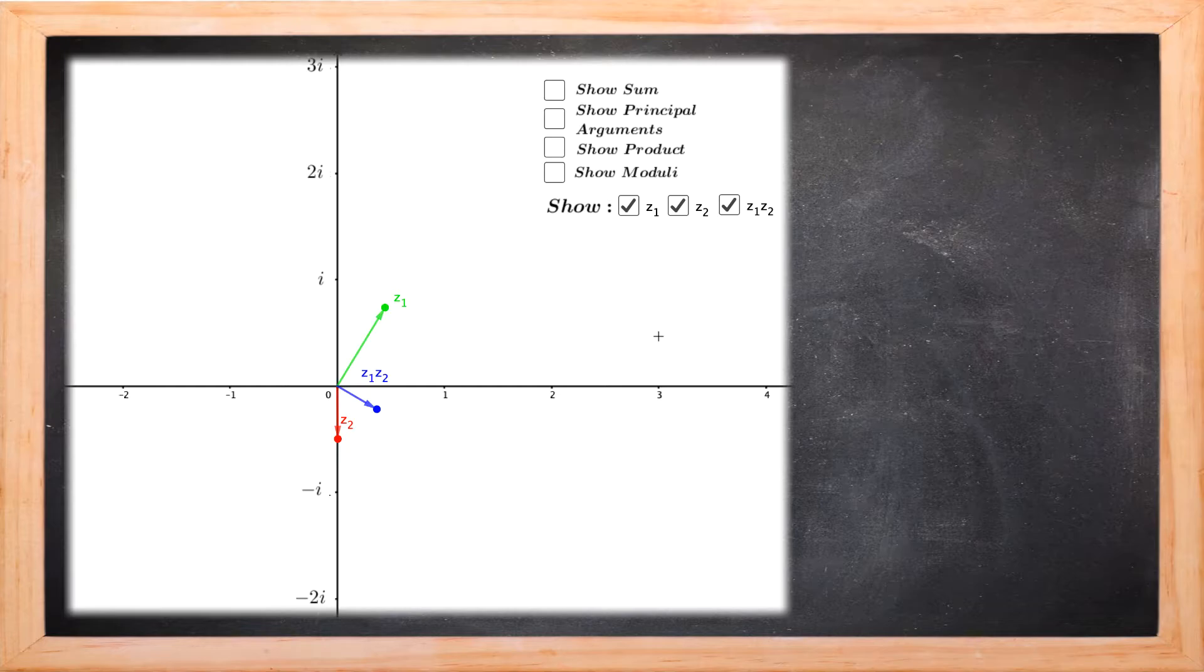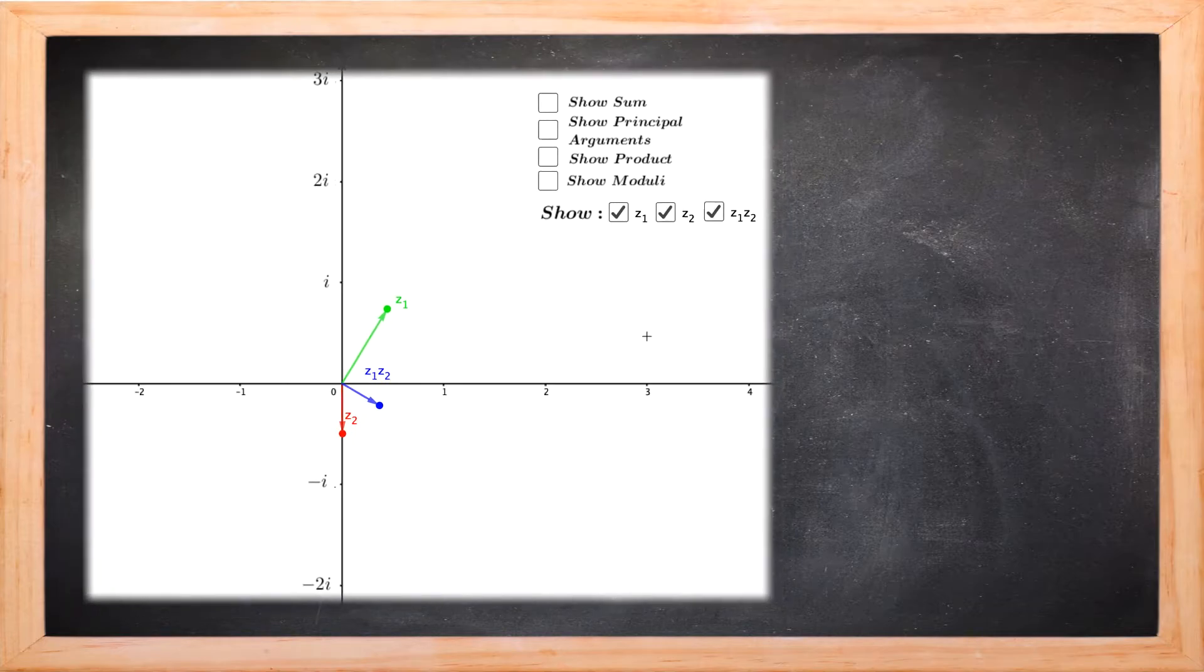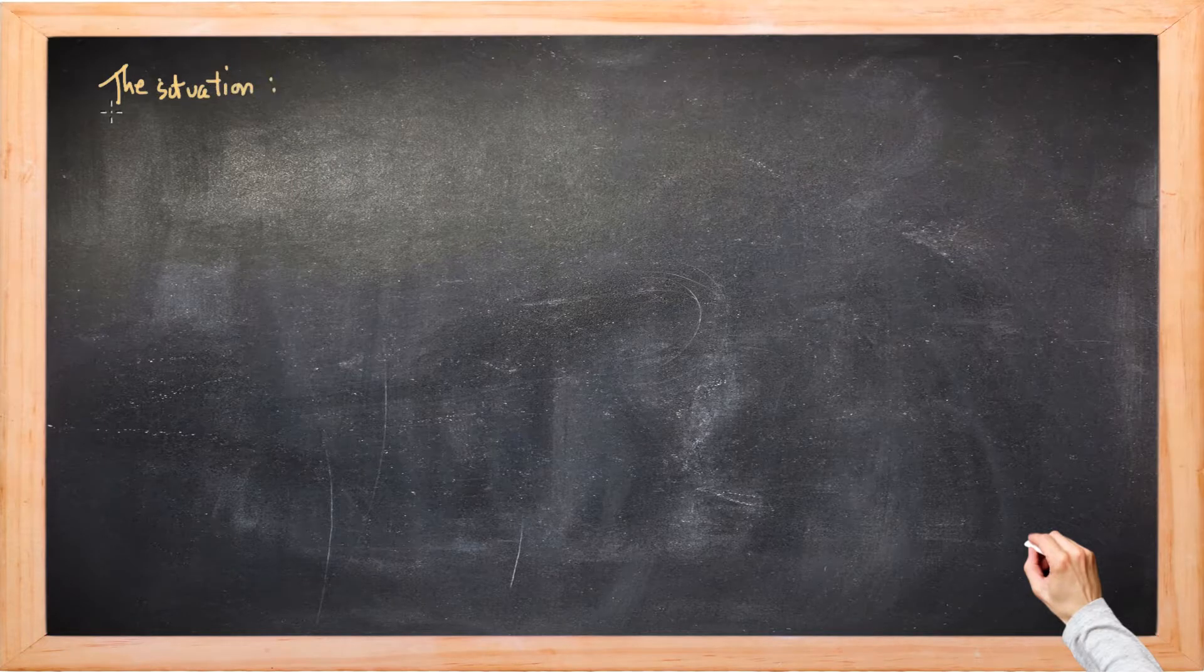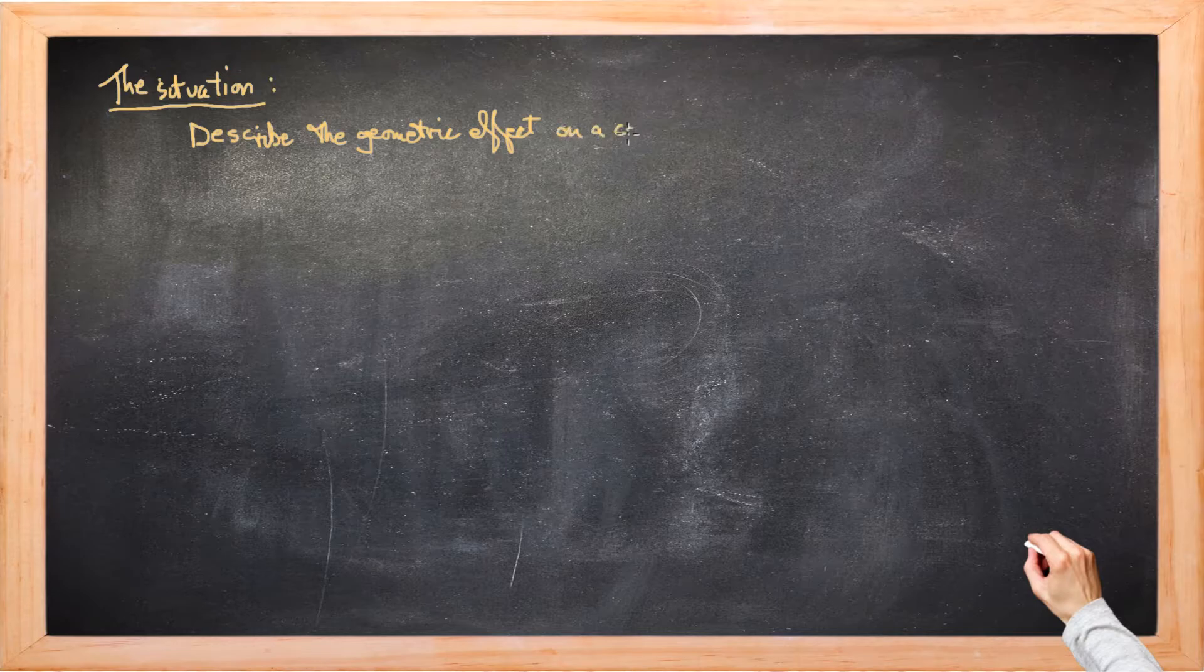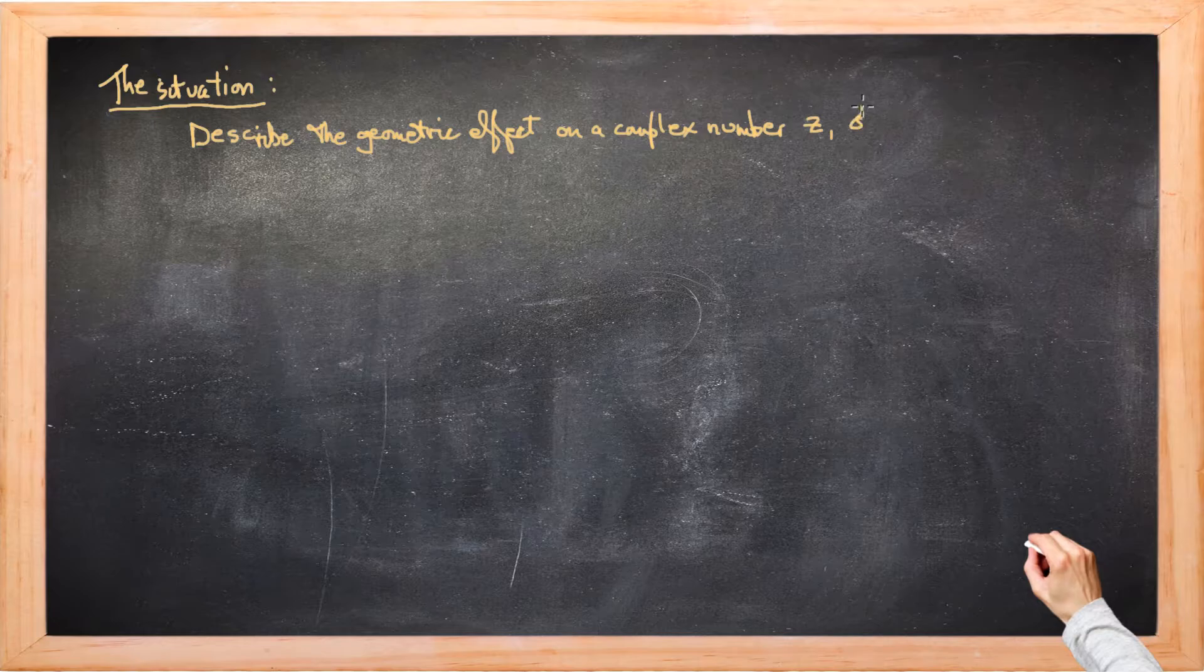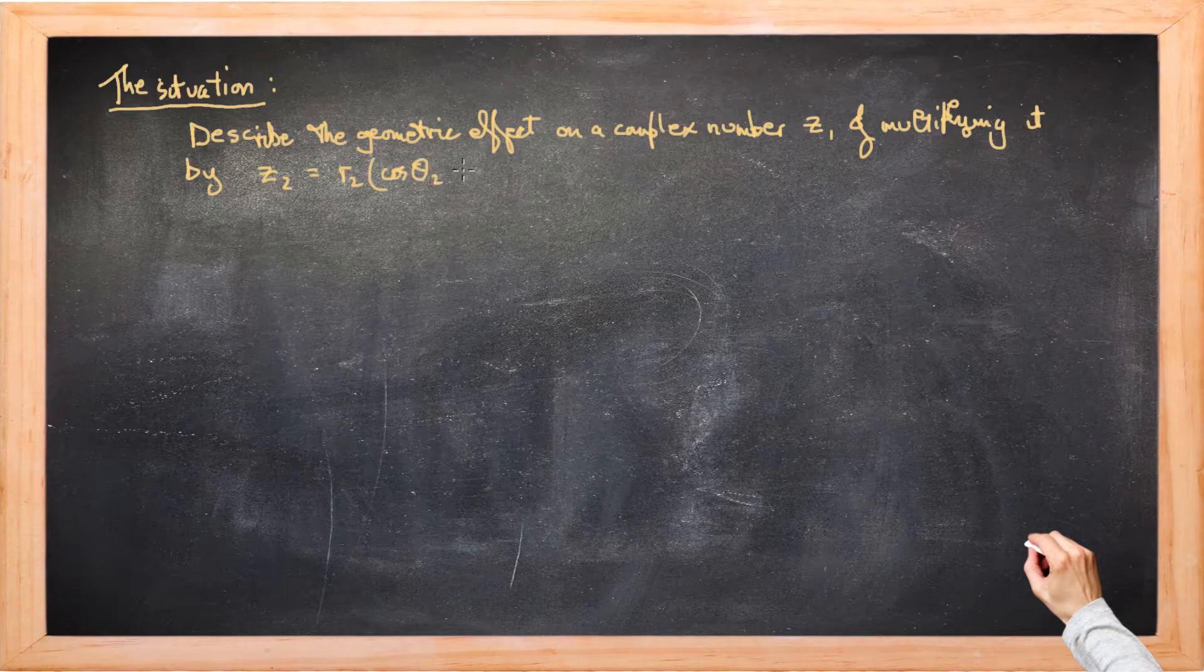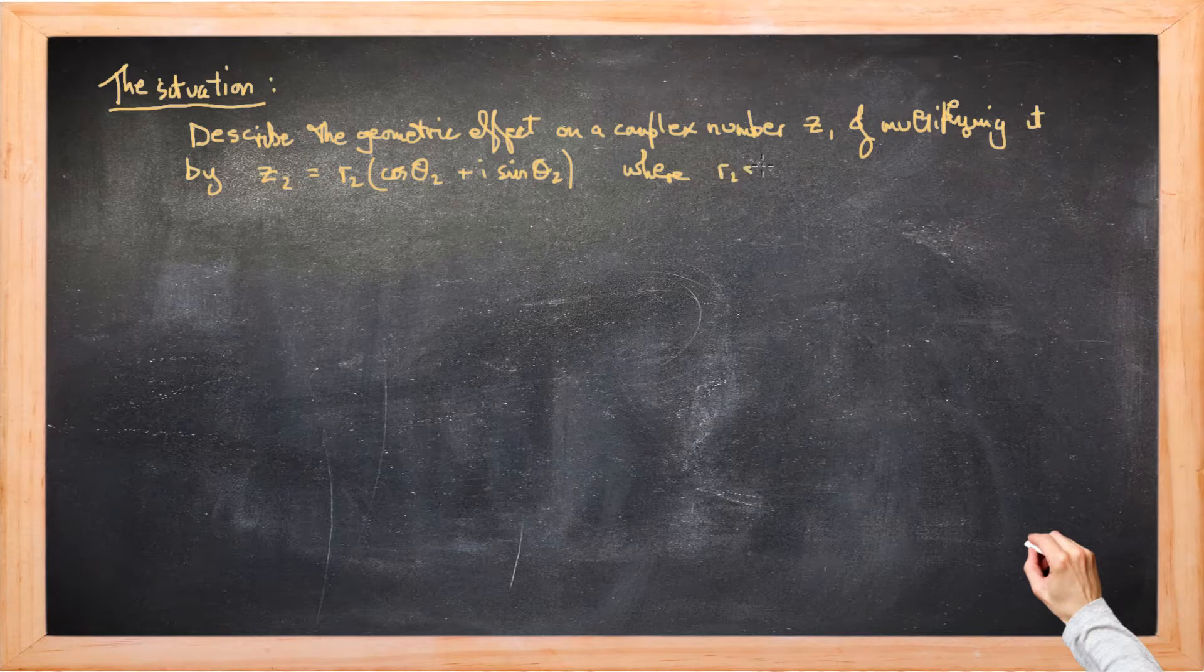So let's now summarise what we've found. The situation that we're looking at is the following. We've got an investigation looking at the geometric effect on a complex number Z1 of multiplying it by Z2. Now we'll write Z2 in polar form. Its modulus is R2 and its principal value of the argument is theta 2.